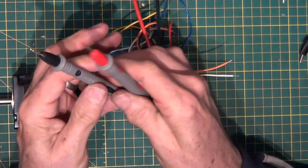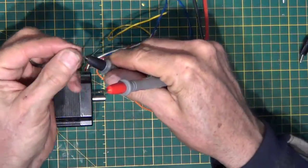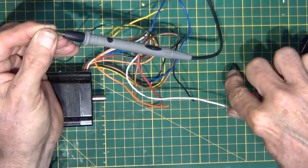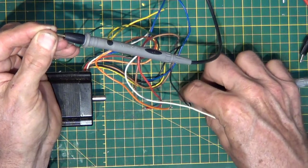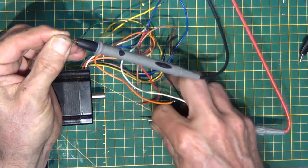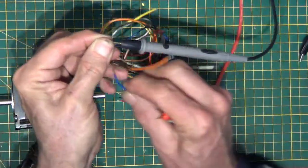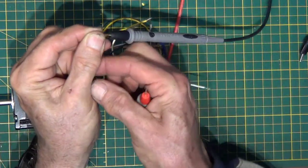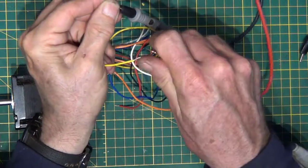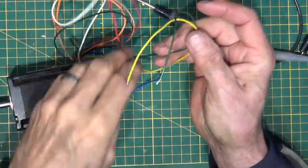I have a digital multimeter set for continuity. I'm going to go through individual wires and try and find a pair. I'm working on green to orange, nothing. Green to white, nothing. Green to black, nothing. Green to red, green to brown, nothing. Green to blue, nothing. Green to yellow. So green and yellow are one coil in this motor.